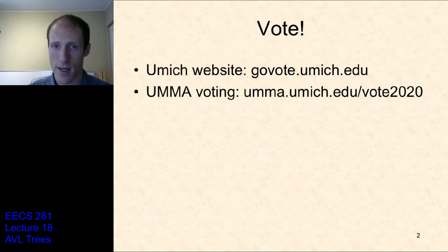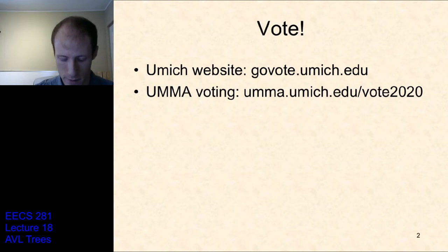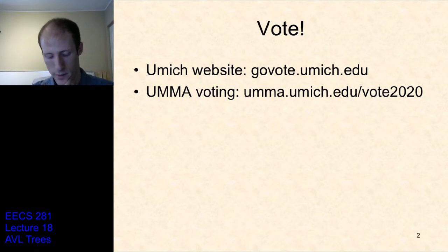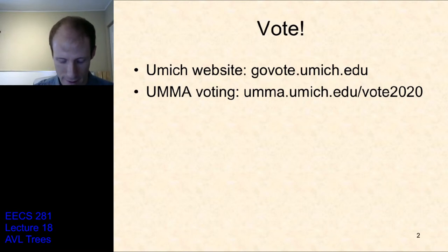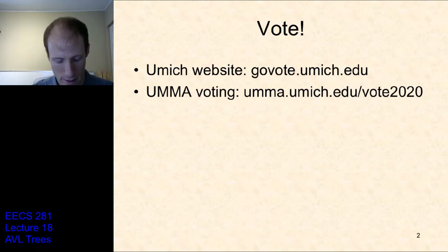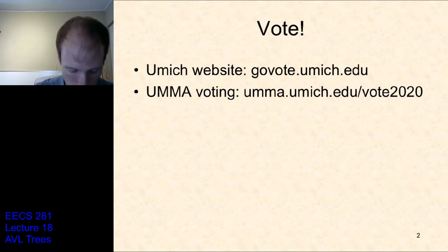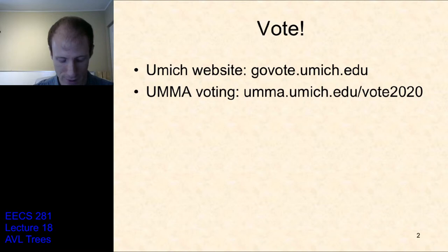So last time we talked about trees, a bunch of tree terminology — root, parent-child, leaf nodes, binary trees. We talked about how to do a tree traversal: pre-order, post-order, in-order traversals. And then we got into binary search trees.